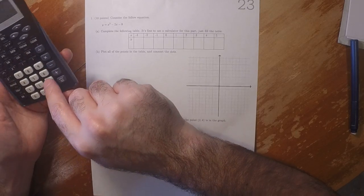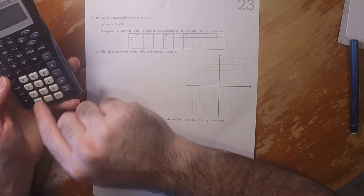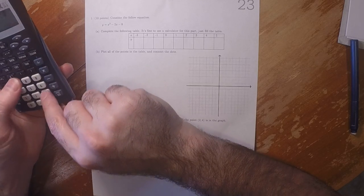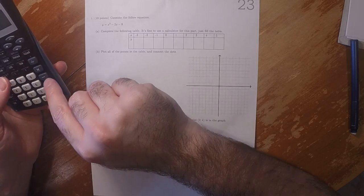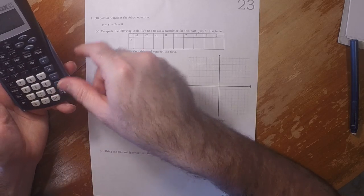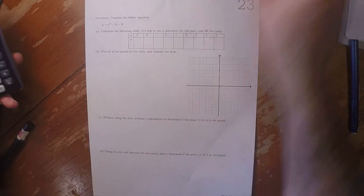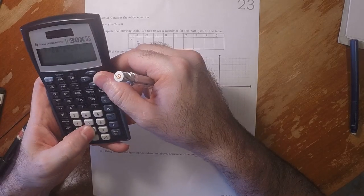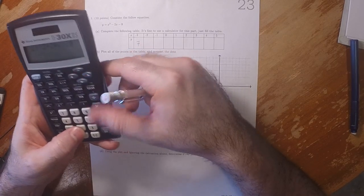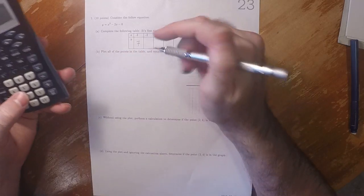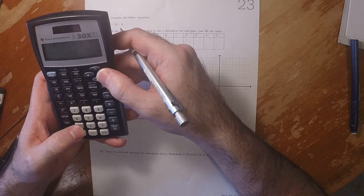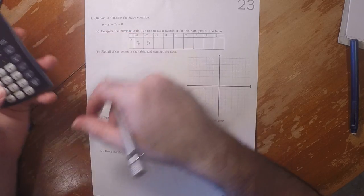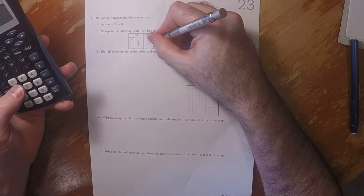For x = -3: negative 3 squared minus 2 times negative 3 minus 8. That value gets 7. Then at x = -2, the value is 0. At x = -1, the value is negative 5.